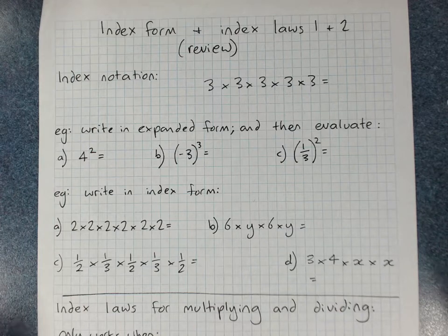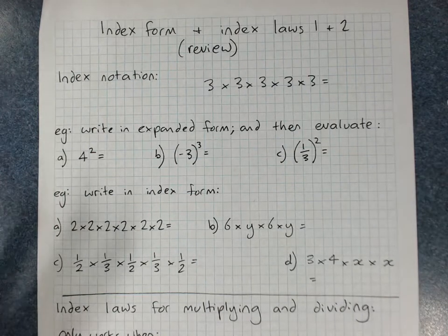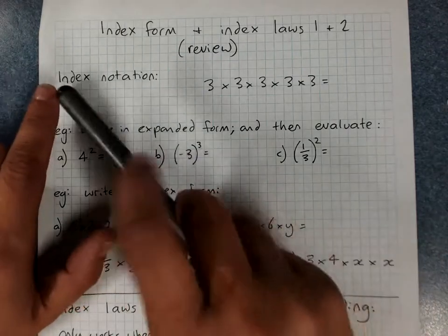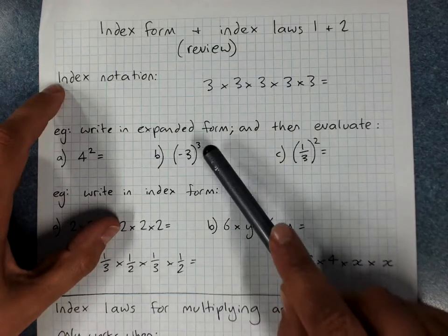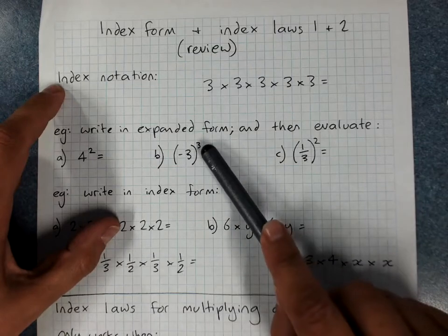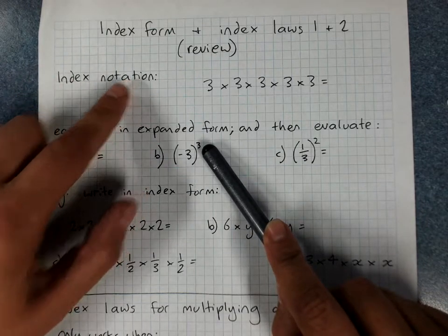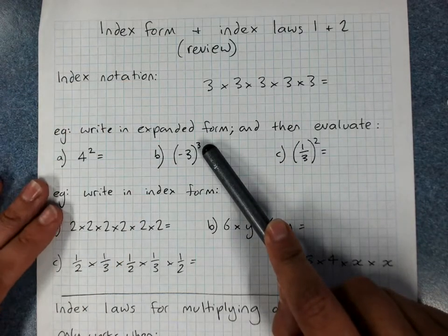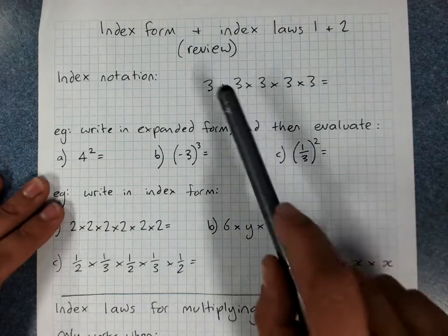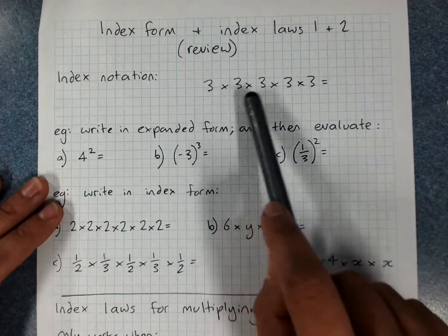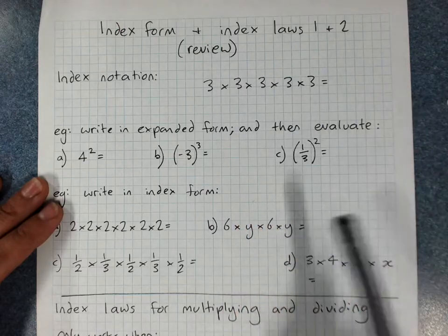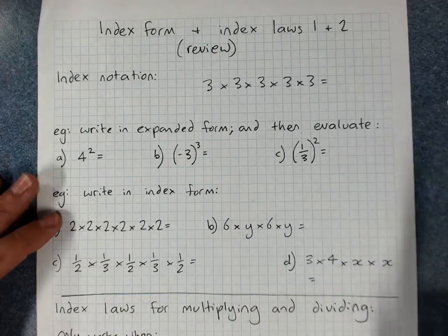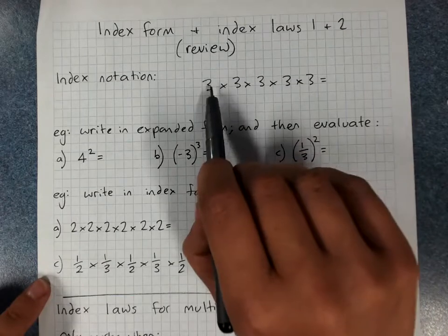Index form and index laws 1 and 2 — just a review from last year. Remember, index means the power, the little number after a number or a letter. Index notation is a way of writing it when I've multiplied a number by itself or a letter by itself, written in index form.